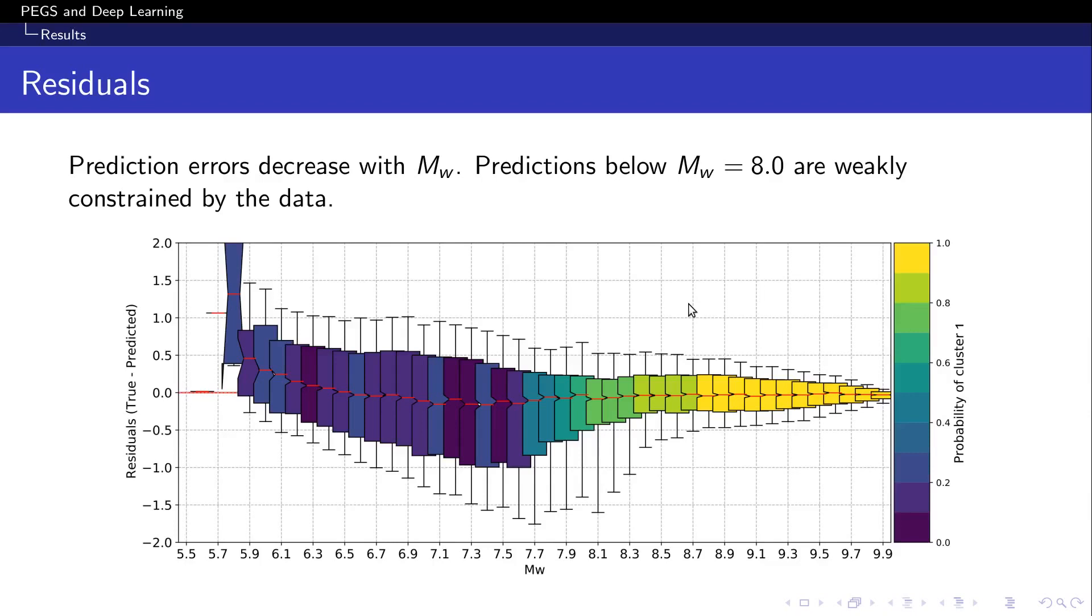We can take a closer look at the evolution of the residuals as a function of magnitude. Here, we color each box plot according to the probability of the predicted value to fall into the first cluster, which we know corresponds to the unbiased predictions. As this probability decreases, errors on the predictions increase, as indicated by the height of the box and whisker plot.